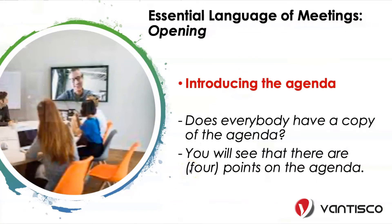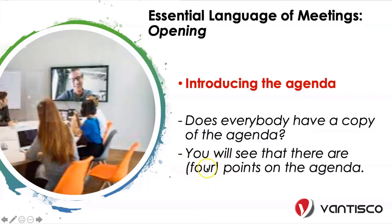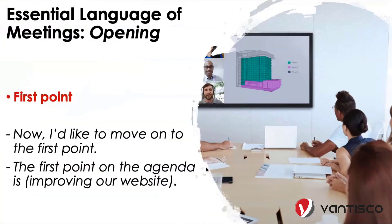من بعد ما نقول الهدف، we want to introduce the agenda، بدنا نحكي عن النقاط الموجودة على جدول الأعمال. مثلاً: 'Does everyone have a copy of the agenda?' أو ممكن نقول 'You will see that there are four points on the agenda.' وبعد introducing the agenda، بدنا نبلش نحكي بالـ first point. فينا نقول: 'Now I'd like to move on to the first point.' أو 'The first point on the agenda is improving our website.' هون كيف نبدأ نتحدث عن النقاط الموجودة على جدول الأعمال.